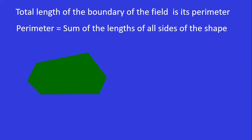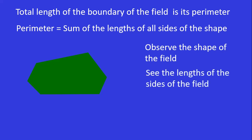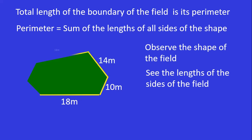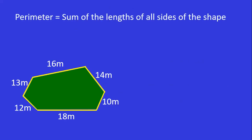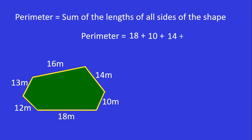Let us take one example. This is one field — observe the shape. The lengths of the sides are: first side is 18 meters, followed by 10 meters, 14 meters, 16 meters, 13 meters and 12 meters. Perimeter of the field is the sum of all the lengths of the sides. So, perimeter equals 18 plus 10 plus 14 plus 16 plus 13 plus 12. Add all these numbers and the answer is: perimeter is 83 meters.